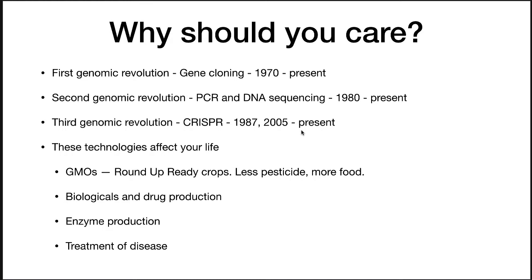These technologies affect your life. One of the major ways is through genetically modified organisms, and one of the main instances of this is Roundup Ready crops. These crops have taken over American agriculture. They have some benefits — if you use a Roundup Ready crop, it is resistant to a pesticide that will kill most other plants, so you don't have to apply as much pesticide and you can grow more food in an area. There are some downsides that are legitimate concerns. There are also biologicals and drug productions.